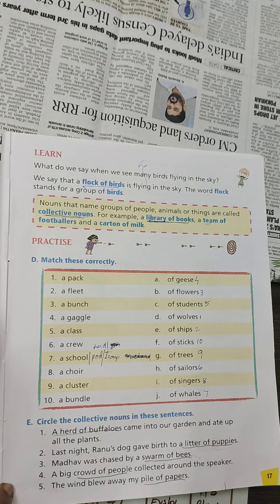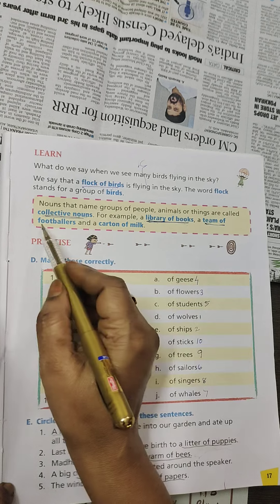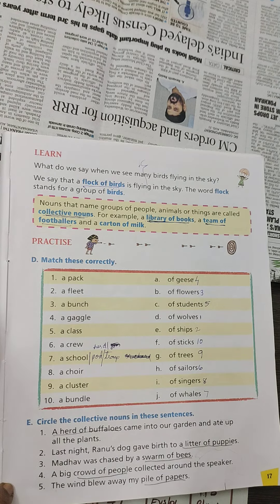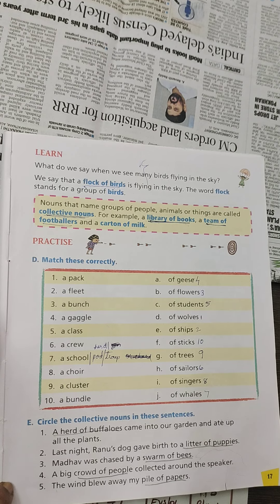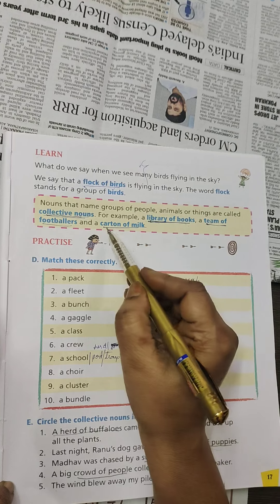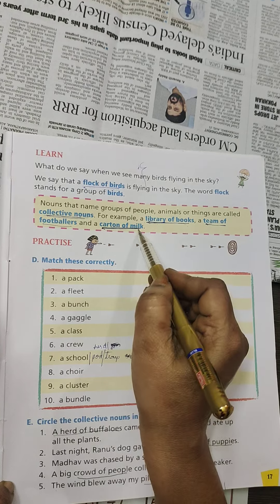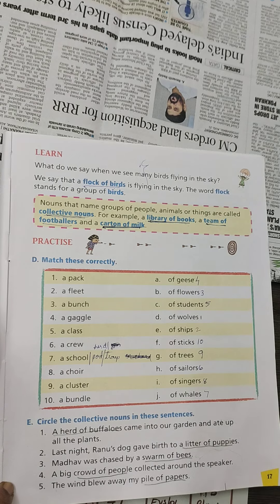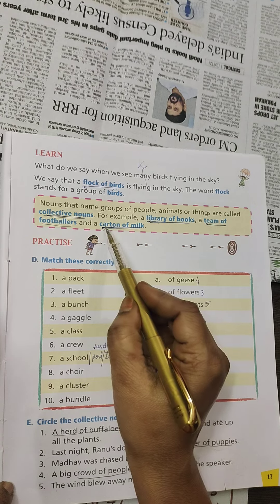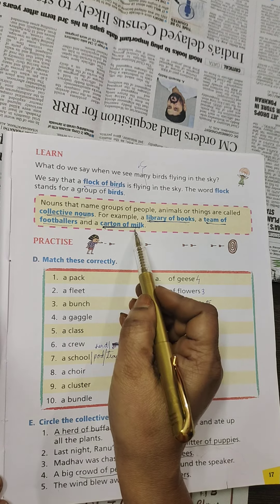Next is team of footballers. Team means a group of players who play together. Next is carton of milk. Milk is an uncountable noun, so it needs a container. Carton of milk means a box or container of milk.